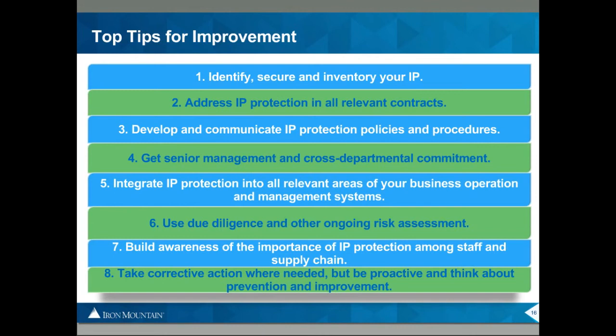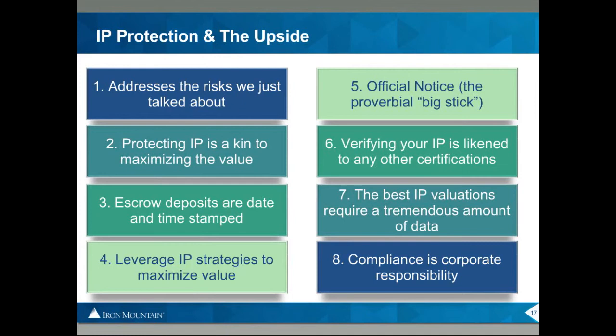The upside to a good IP protection plan: number one, it addresses the risks we talked about — the dishonest people, patent trolls, inadequate protection. Number two, IP is your corporate crown jewels — to protect them is akin to maximizing value. You should always entrust a neutral third party — not the U.S. Postal Service. You can't mail a package to yourself for date and timestamping because while the envelope may not be opened, it remains in your custody and is not tamper-proof. Additionally, it demonstrates how little was spent to protect your corporate crown jewels. On the flip side, if you entrust your IP to a professional services company specializing in such work, it demonstrates how much care went into the creation and protection of that IP, thereby maximizing the value.